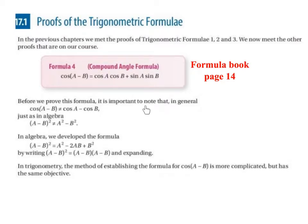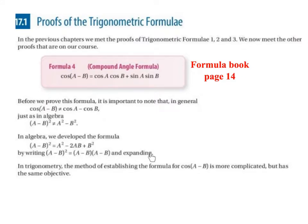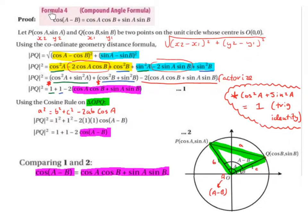Before we prove this formula, it's important to note that in general, cos(a - b) is not equal to cos(a) - cos(b). Just as in algebra, (a - b)² is not equal to a² - b². In algebra, we develop the formula (a - b)² = a² - 2ab + b² by expanding. In trigonometry, the method of establishing the formula for cos(a - b) is more complicated, but has the same objective. So this is the proof of formula 4, the compound angle formula.